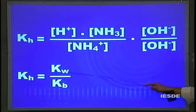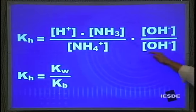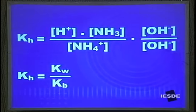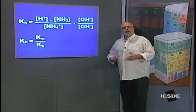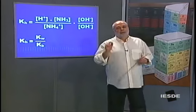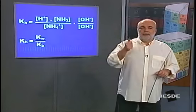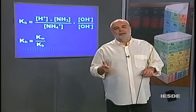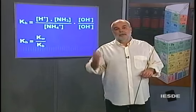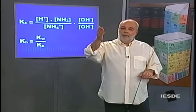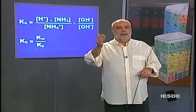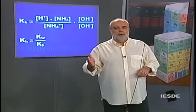Conferindo: H⁺ vezes OH⁻ é Kw; NH₄⁺ vezes OH⁻ sobre NH₃ é Kb. Constante de hidrólise é Kw sobre K de quem for fraco. Dessa vez, quem era fraco era a base, a amônia. Então, Kw sobre Kb — sempre Kw sobre K de quem for fraco.